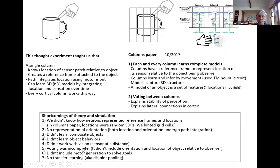Number five relates to the orientation issue — we talked about voting as representing object ID. But we know that we perceive not just the object ID. When I touch something or look at something, I don't just know it's a coffee cup — I know its location and orientation relative to me. Those things have to be resolved by voting as well. So voting was incomplete; we just talked about object ID.